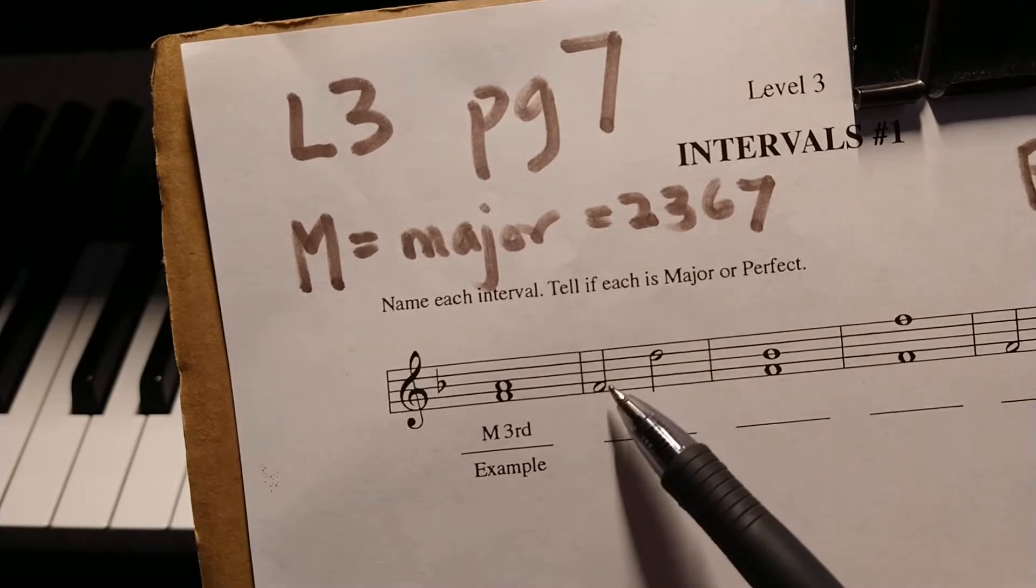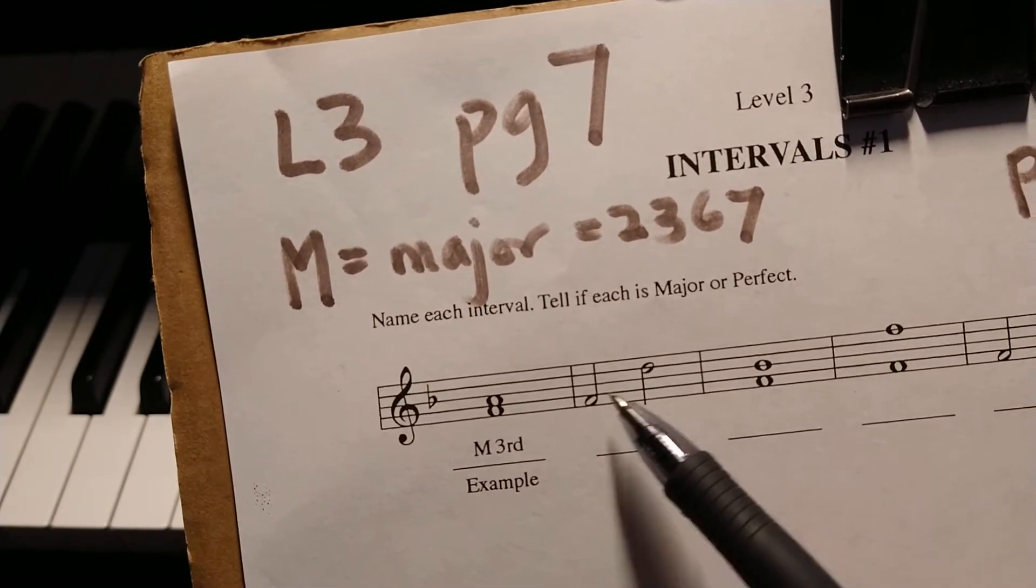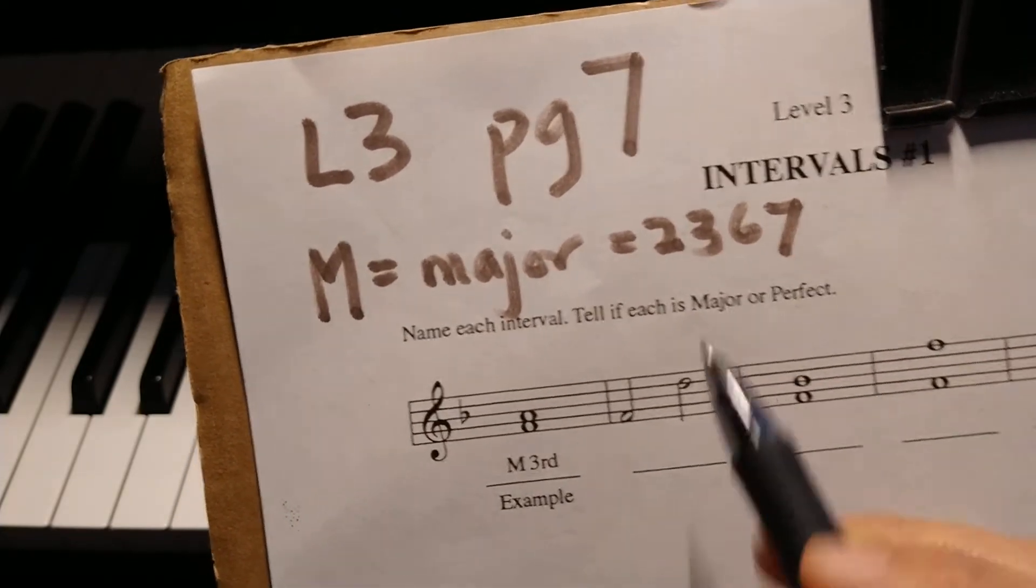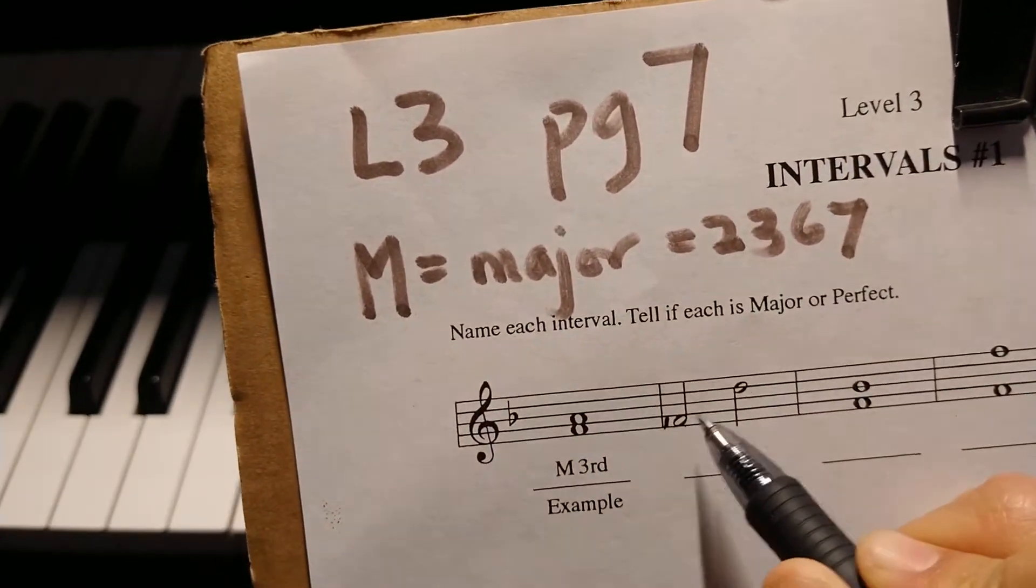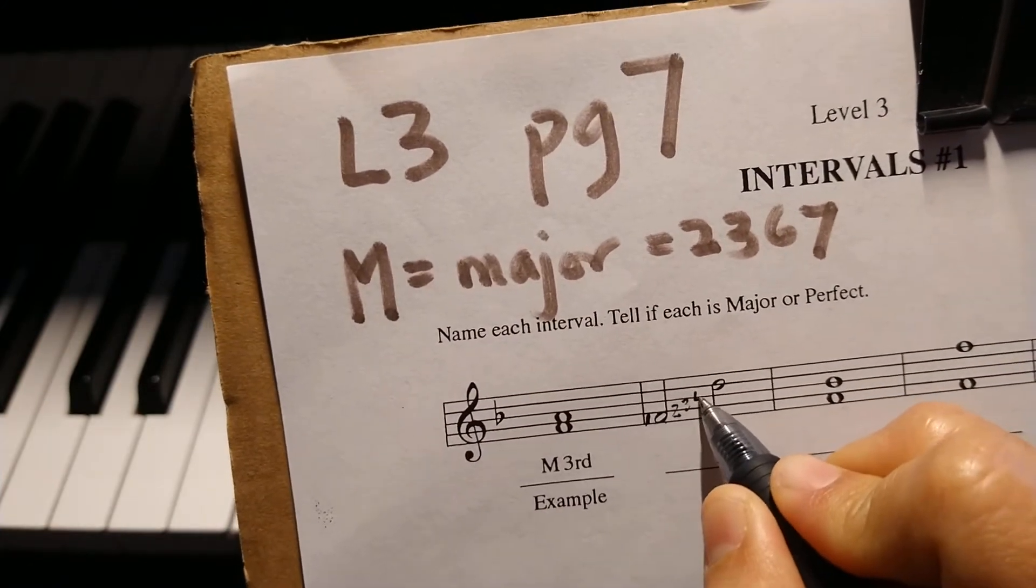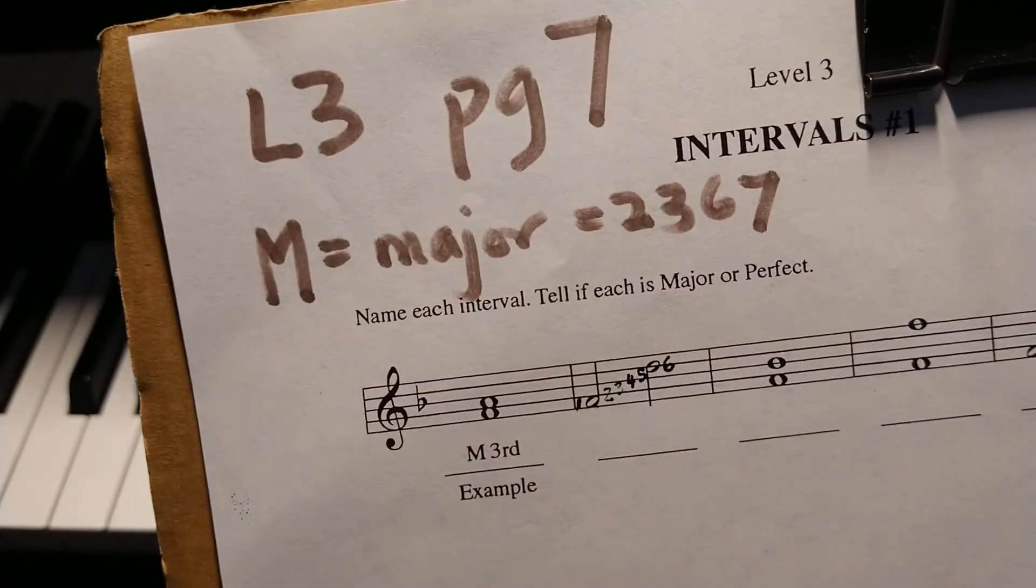So first of all, you're going to count from this note to this note on the staff by space, line, space, line, space. You need to count that space as well. So this space is 1, the line here is 2, the space is 3, the line is 4, the space is 5, then you reach that line is 6.